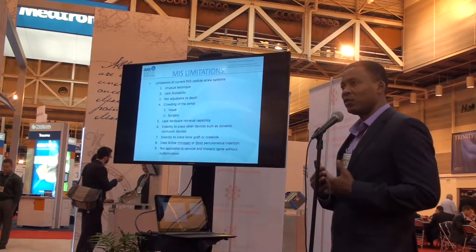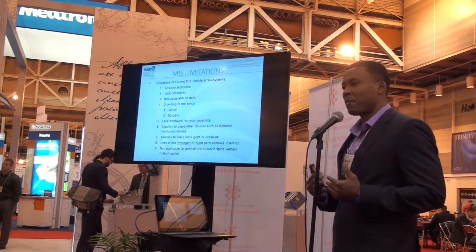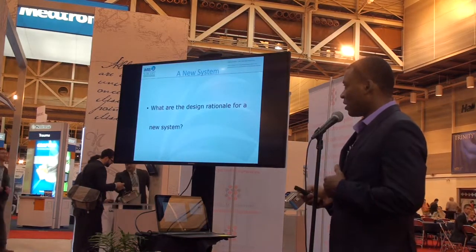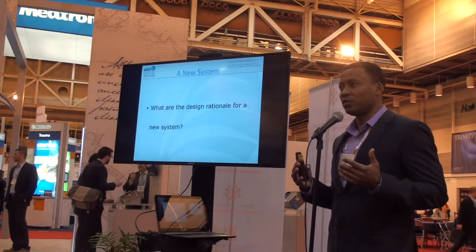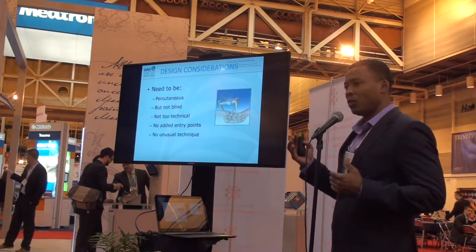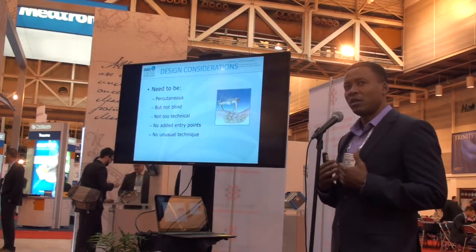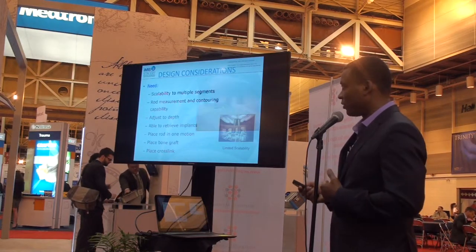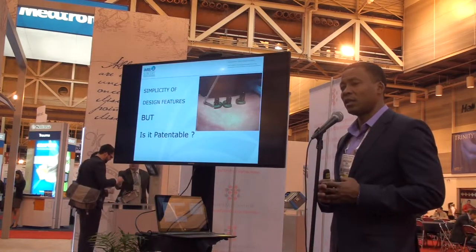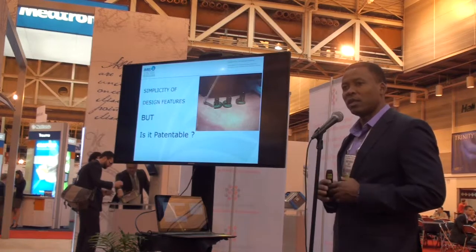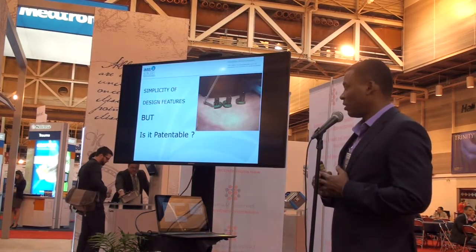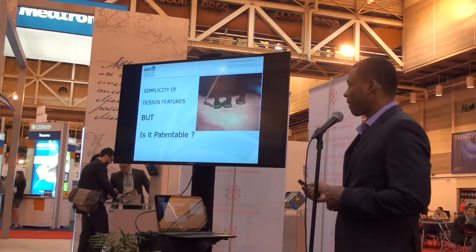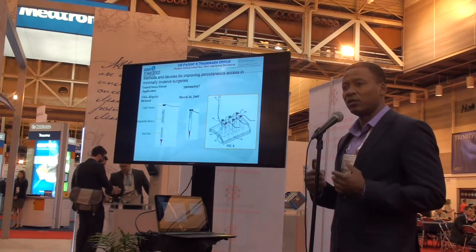Once we established the demand, we looked at the limitations of existing systems — not just criticizing them, but cataloging the specific limitations. From that, I decided what the design rationale for the new system should be. We went through the competition and looked at the design considerations, and we ended up with a system we wanted to be simple in its design. The next question was: can we patent and protect this? Because if we can't, the value may be questionable. So I filed a patent with the original design.